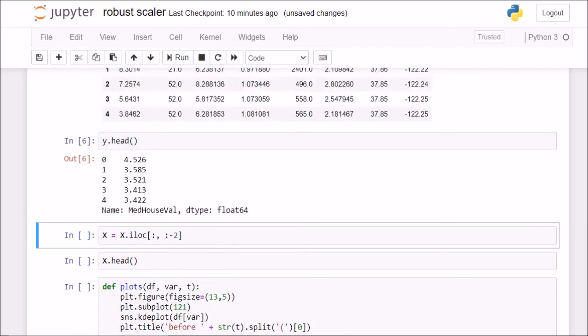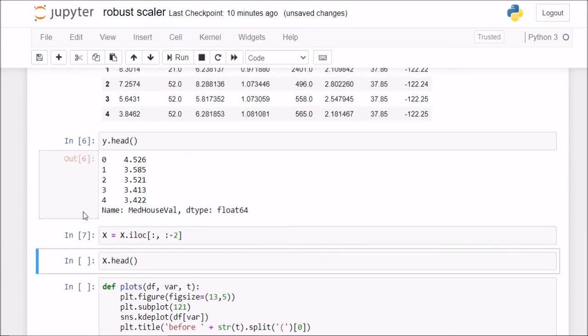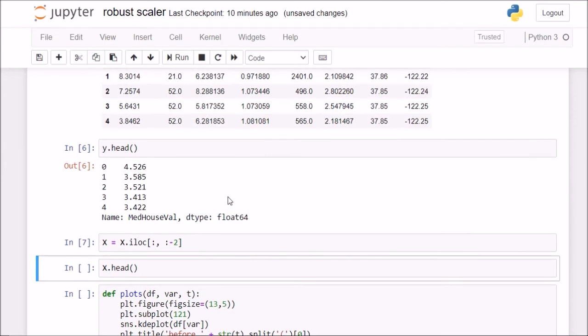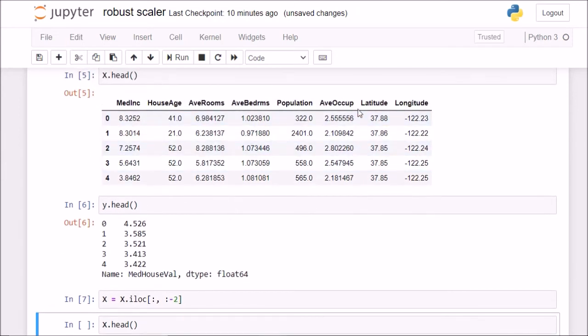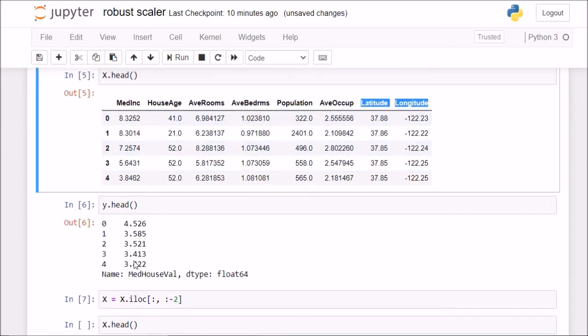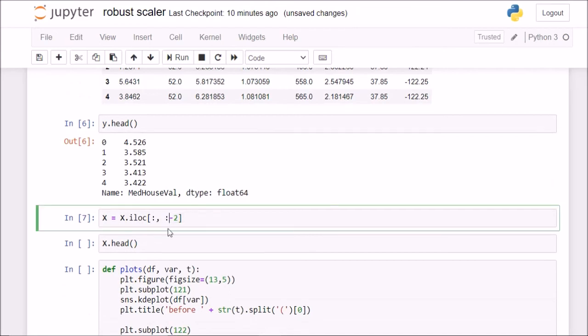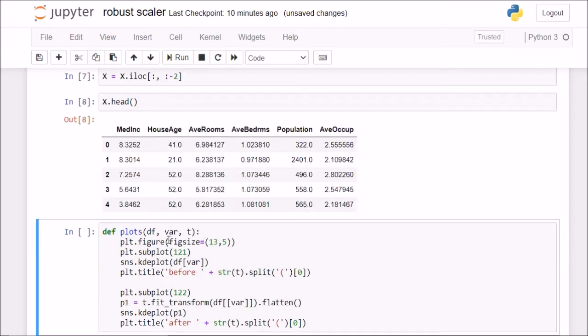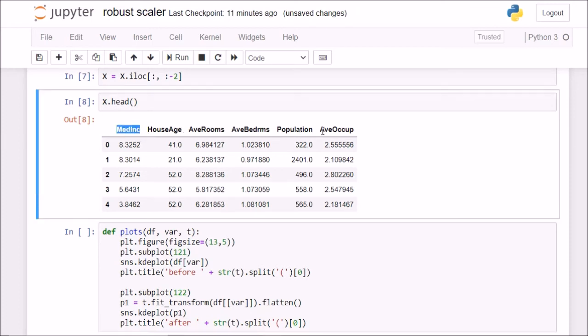So this is my y basically, median house value for each particular block. Then my x.iloc. So now, I do not want, since I do not want this latitude and longitude, I'll remove them using this slicing. Then if I check x.head, it tells me that it is running from median income until average occupancy.